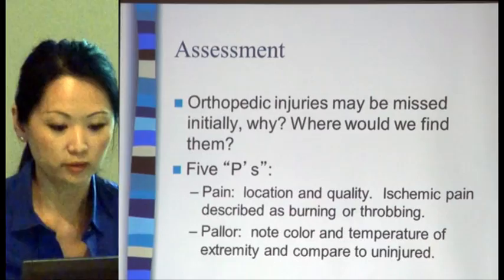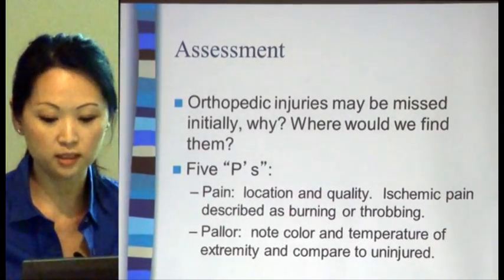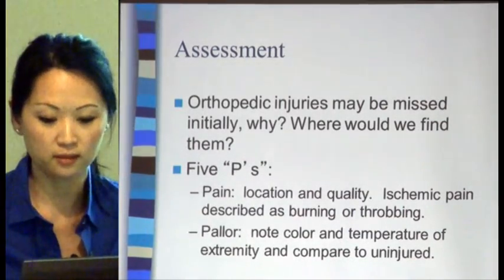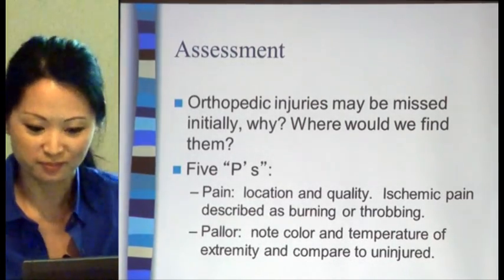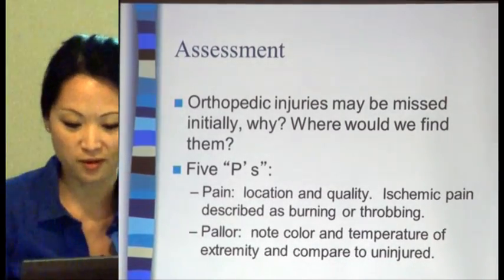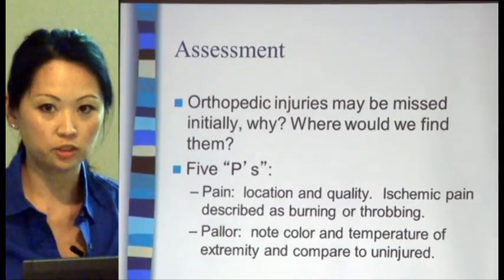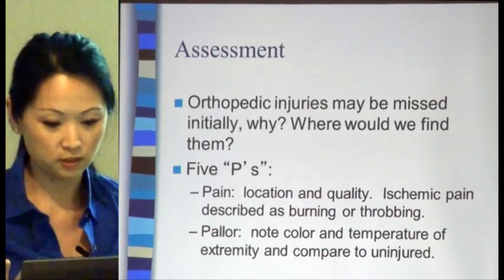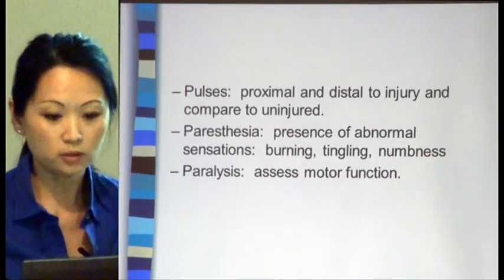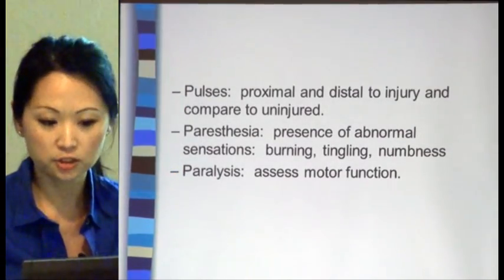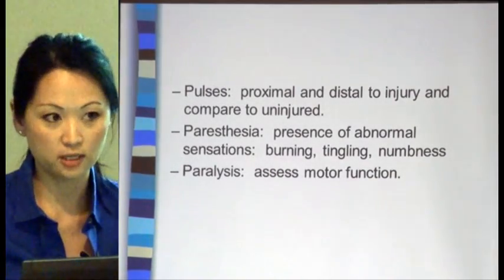So your five P's. Pain — location and quality; ischemic pain is described as burning or throbbing. Pallor — color and temperature of the extremity; compare that to the uninjured extremity, especially if someone has dark-colored skin. Pulses — there can be vascular injury, so check pulses proximal and distal to the injury and compare to the uninjured side.